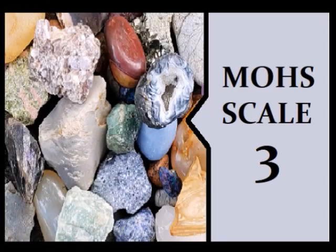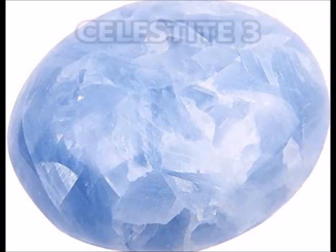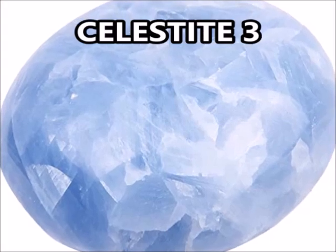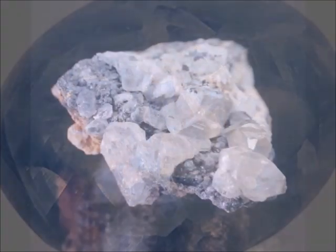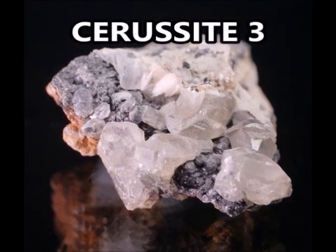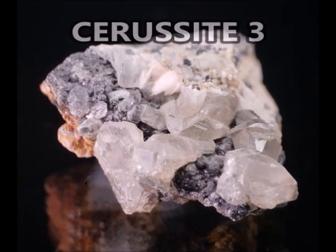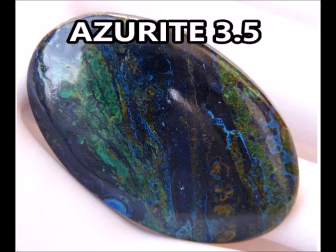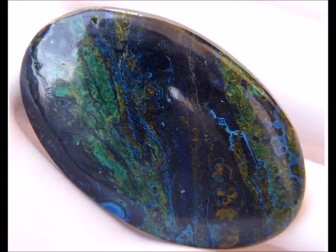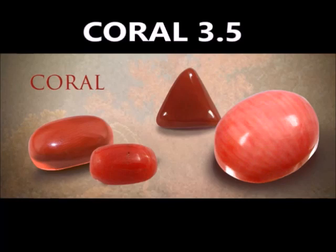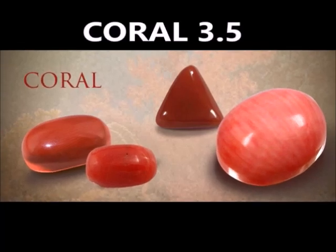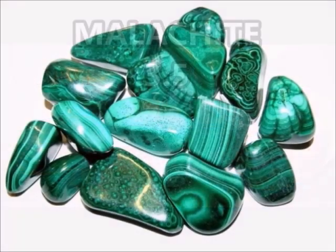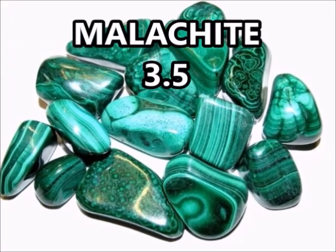Mohs scale 3. Celestite, 3. Cerussite, 3. Azurite, 3 to 3.5. Coral, 3.5. Malachite, 3.5.